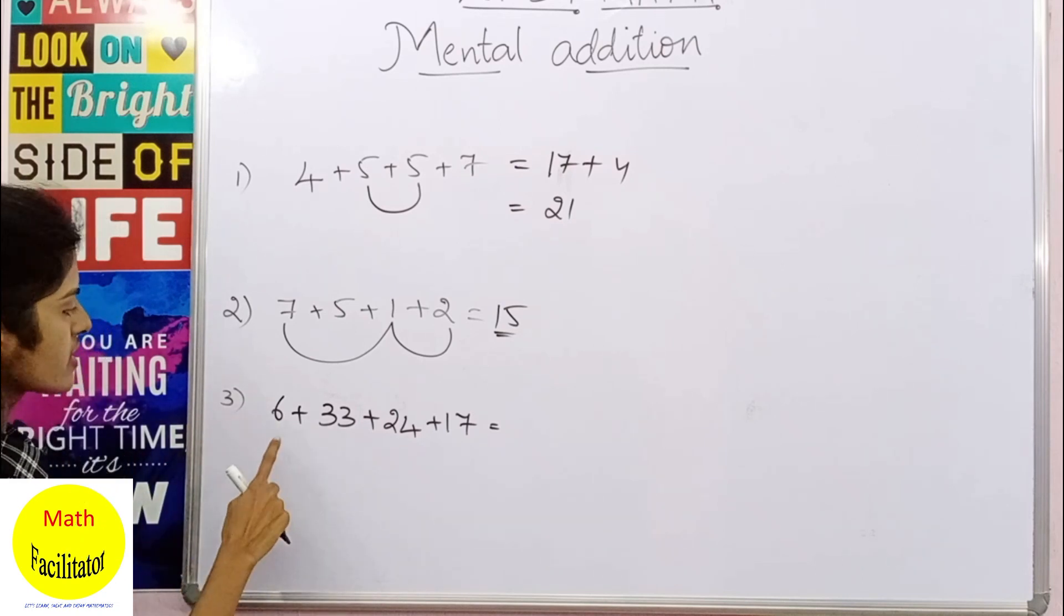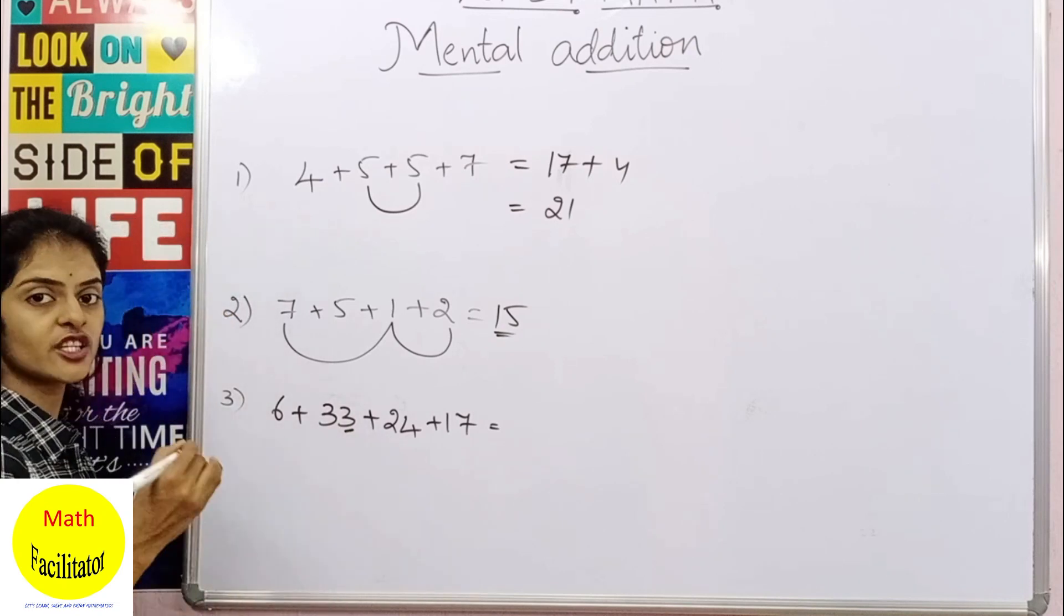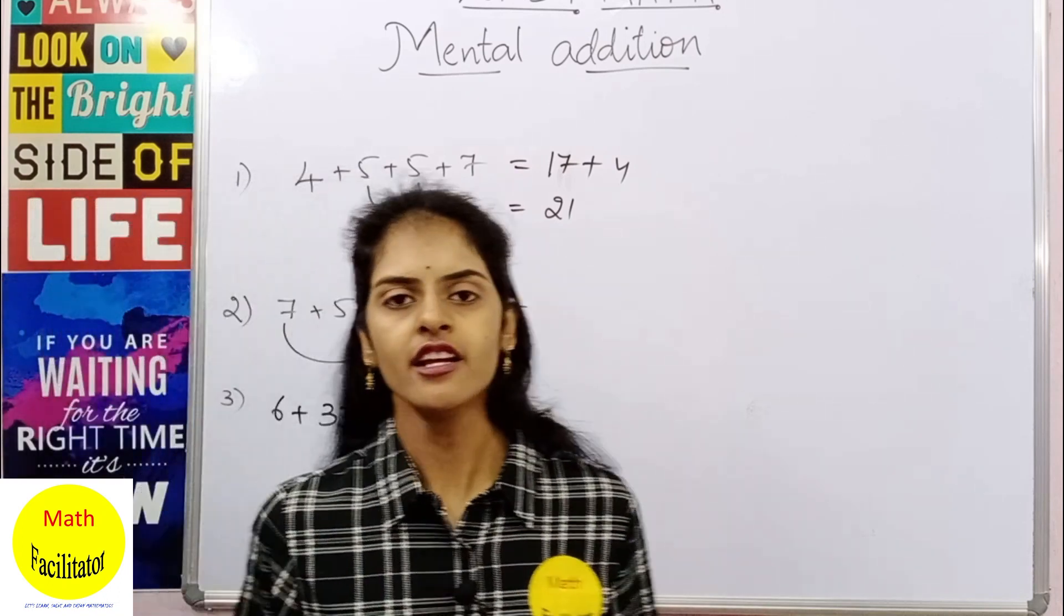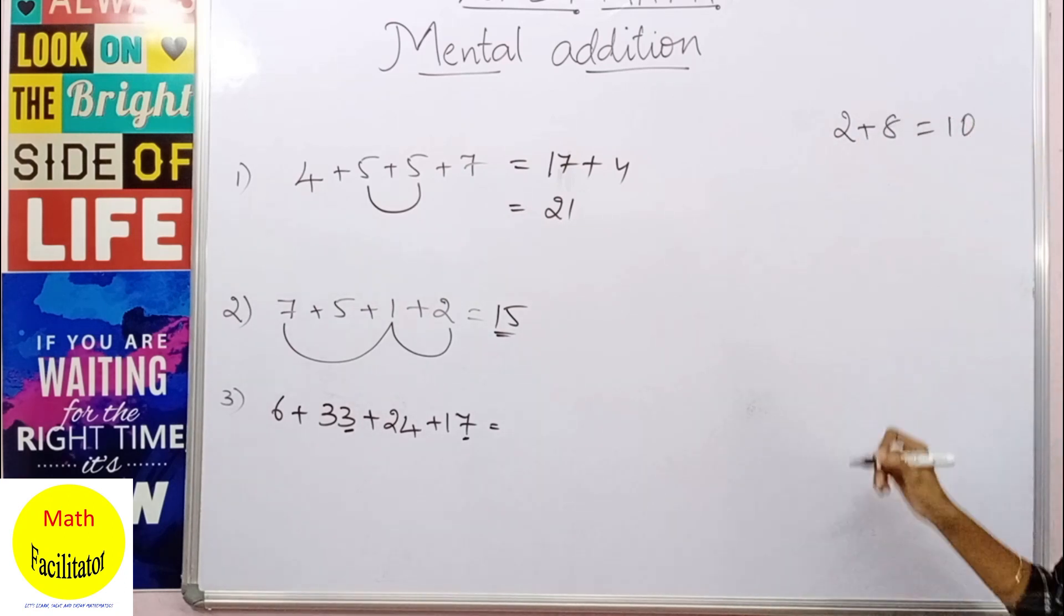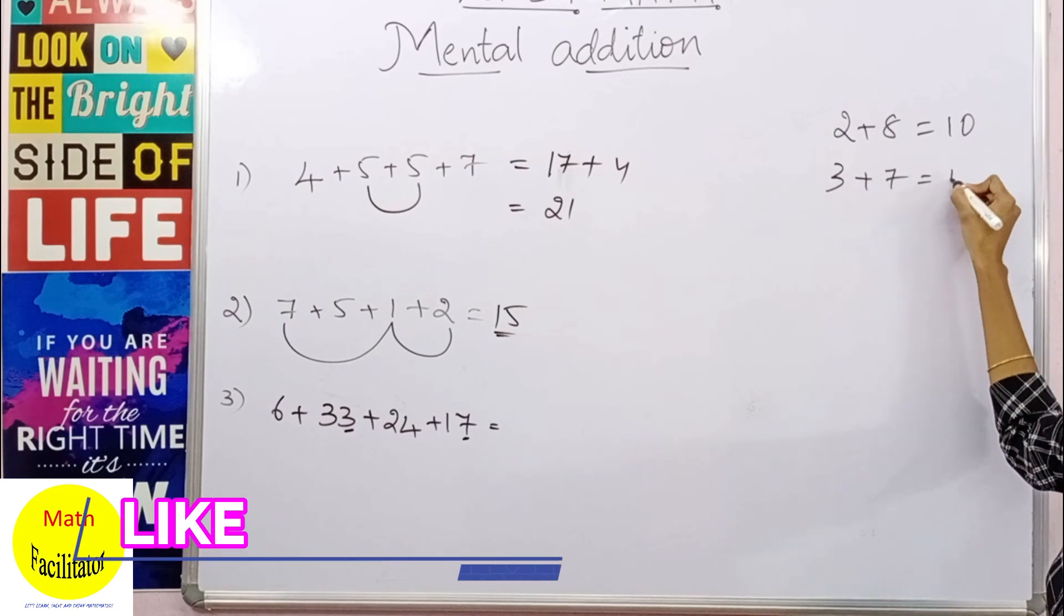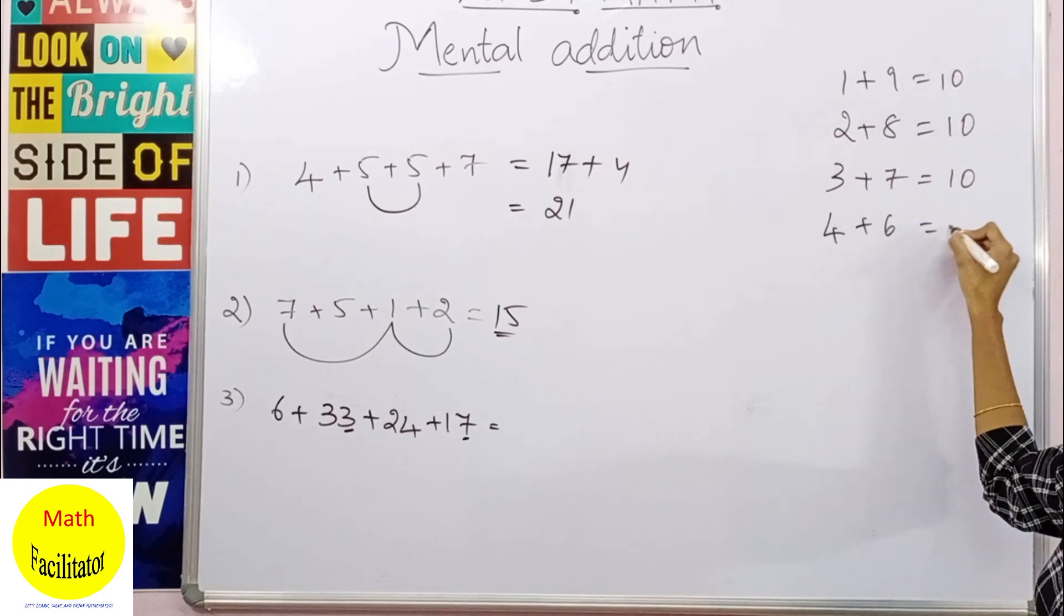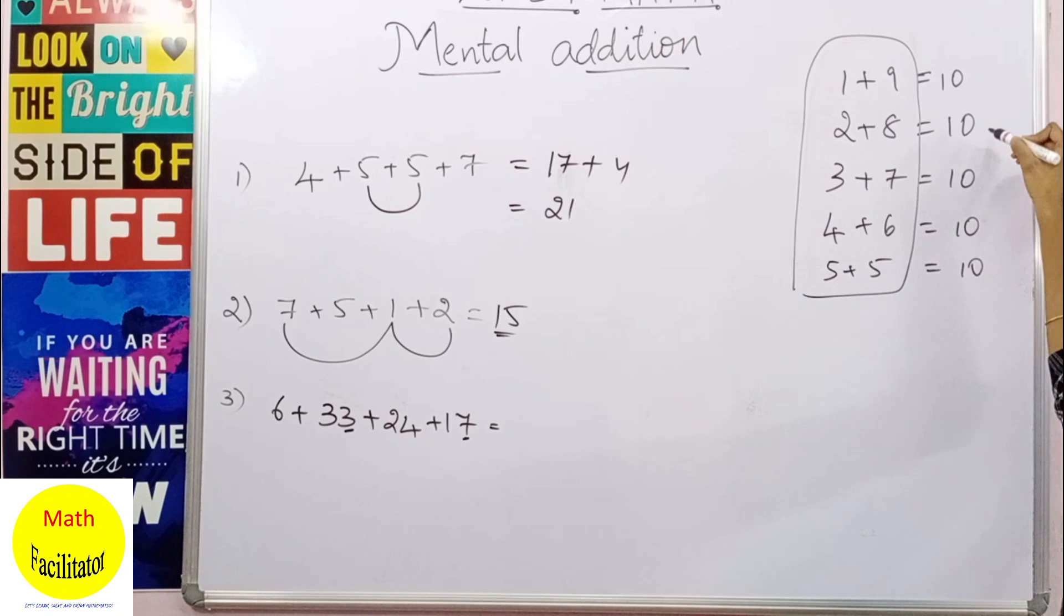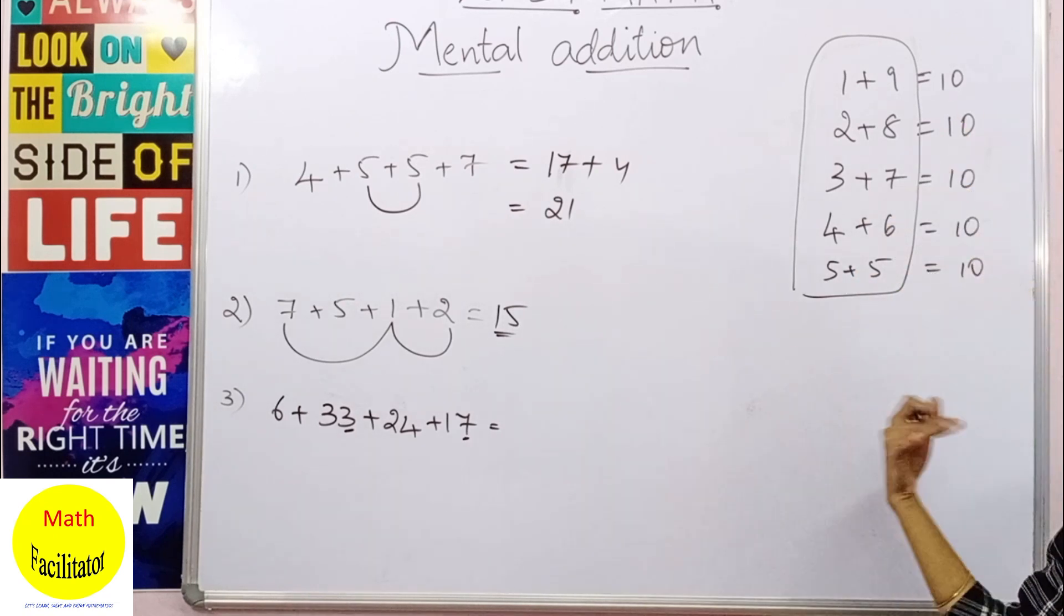Now look at this problem, 6 plus 33 plus 24 plus 17. By just looking at these digits, unit digits, you have 3 here and 7, and you know that 7 plus 3 makes 10. So now you have to remember that 2 and 8 add up to give you 10, and 3 plus 7 gives you 10. Similarly 1 plus 9 gives you 10, and 4 plus 6 gives you 10. 5 plus 5 also makes 10. So you have to remember these combinations which add up to 10. This 10 is nothing but whole. Now let us try to find these combinations in our calculations.